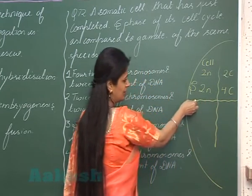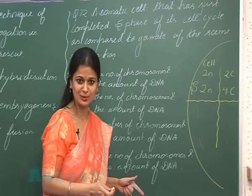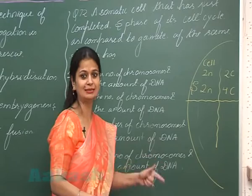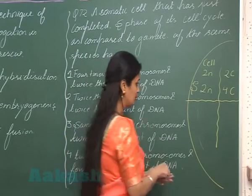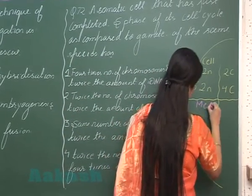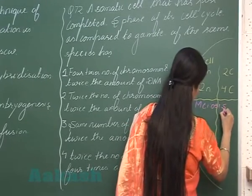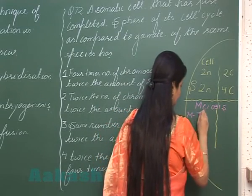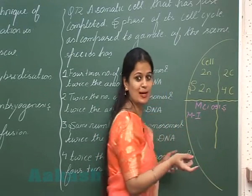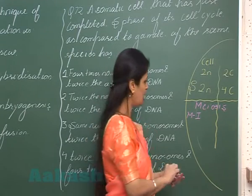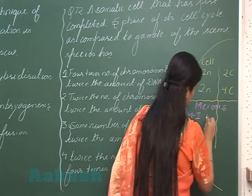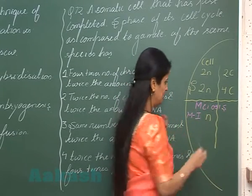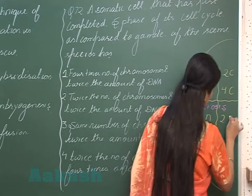After S phase, G2 phase occurs, and then the cell enters division — that is meiosis. In meiosis I, the number of chromosomes is reduced to half, so the condition becomes haploid. The DNA content is also reduced to half, that is 2C.